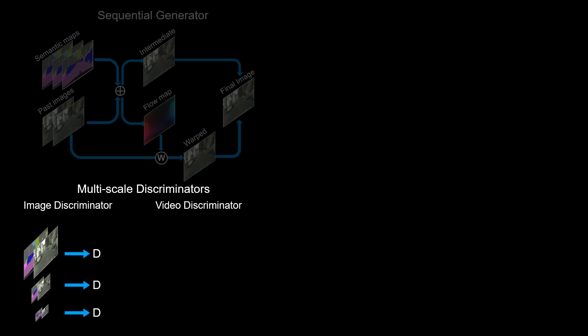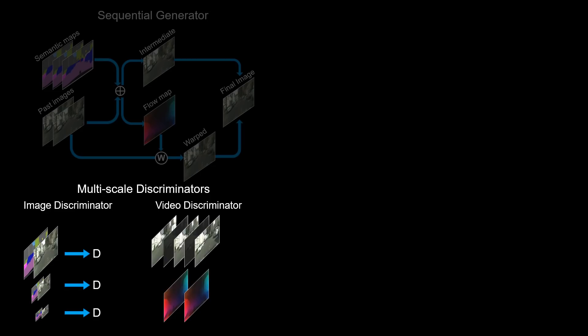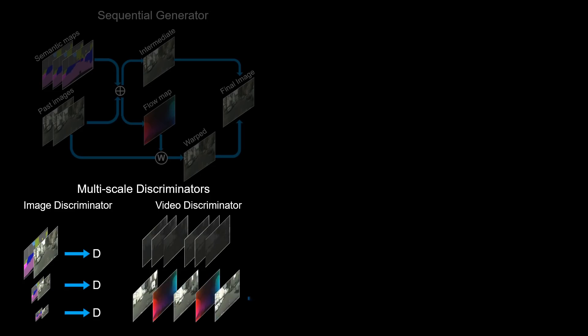Our video discriminator takes in both flow maps and neighboring frames to ensure temporal consistency. We also subsample the frames before feeding them into the discriminator, which can be seen as multiscale in the time domain.